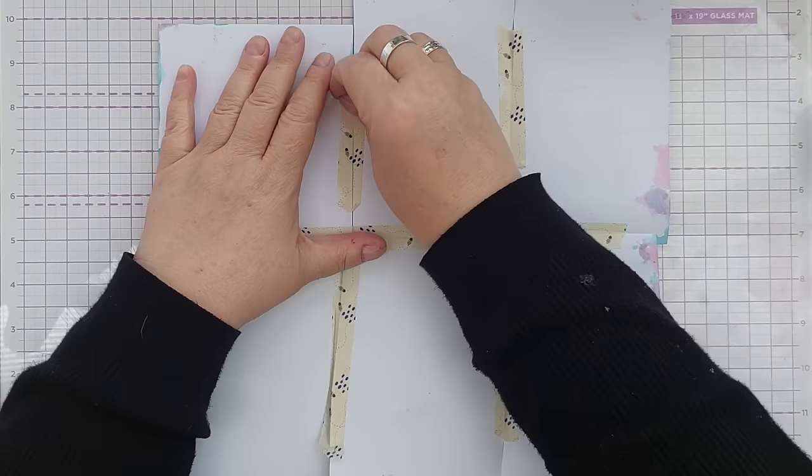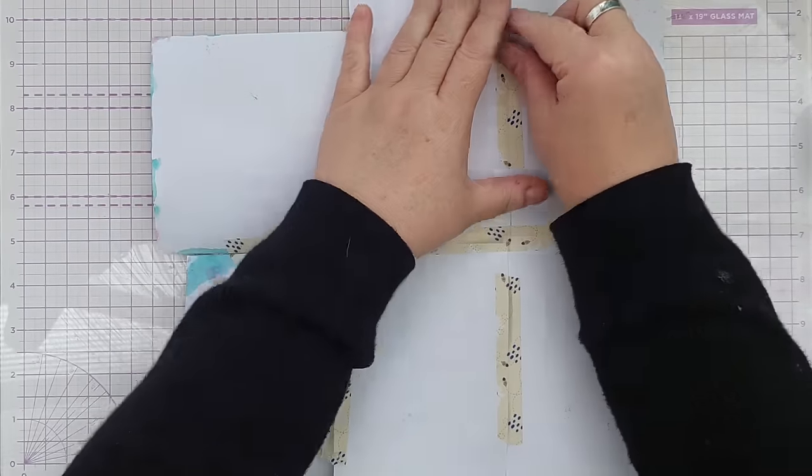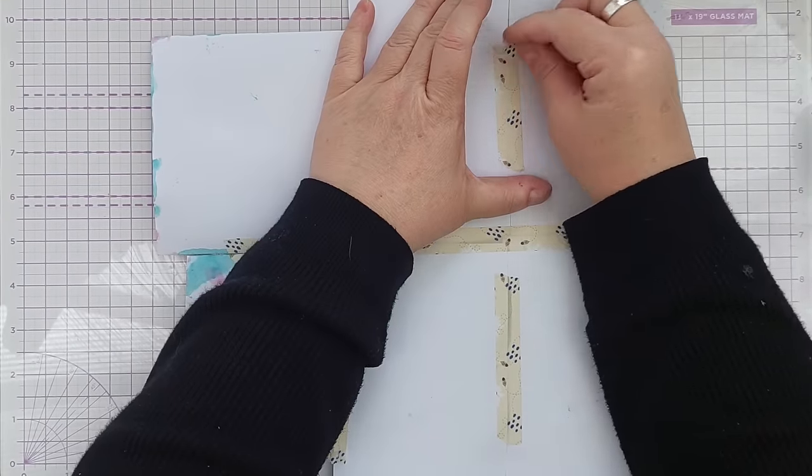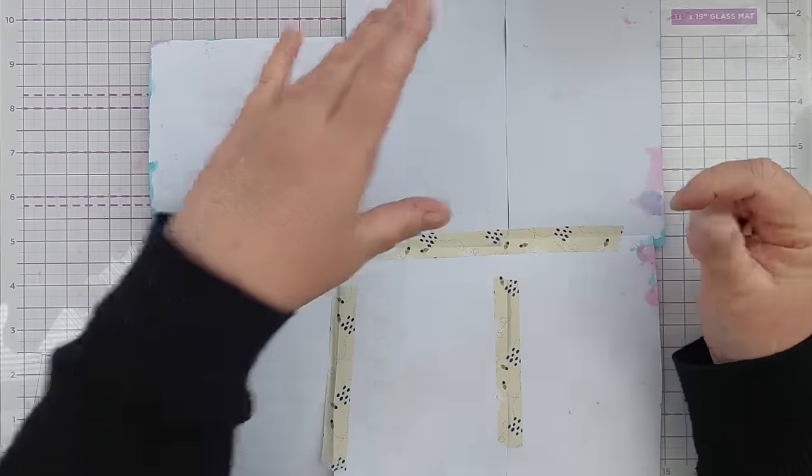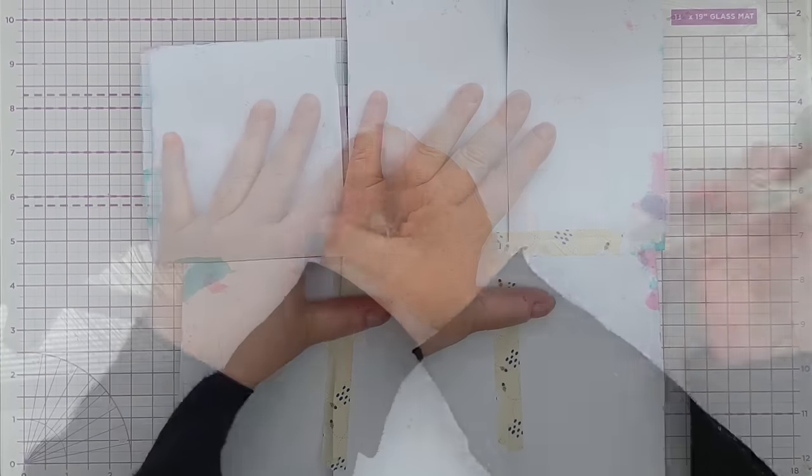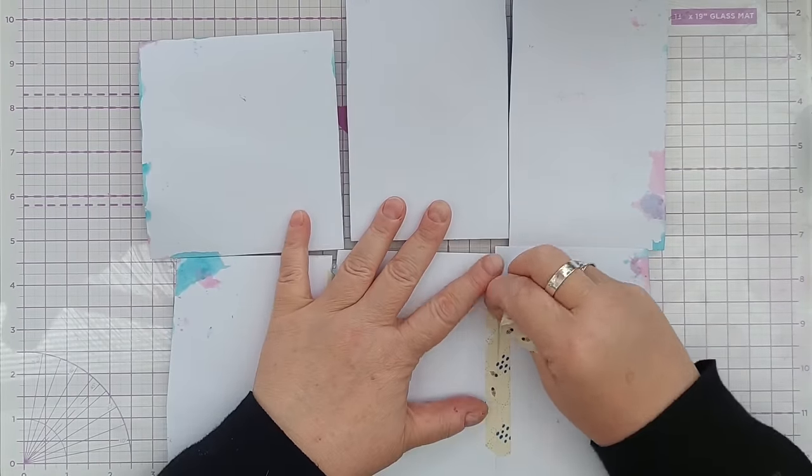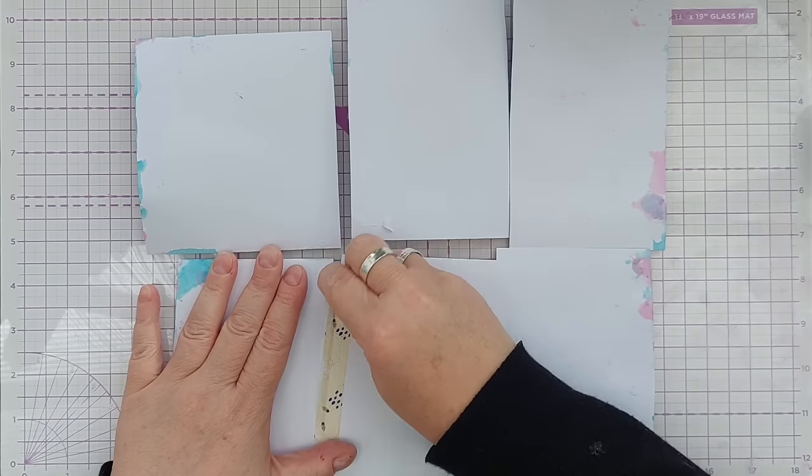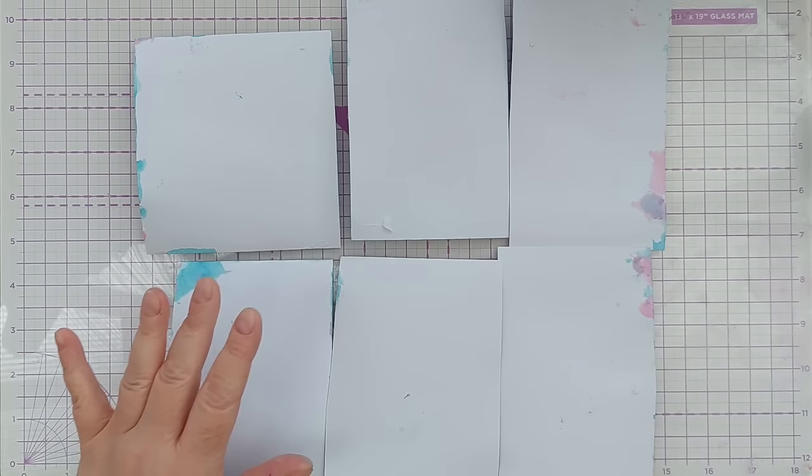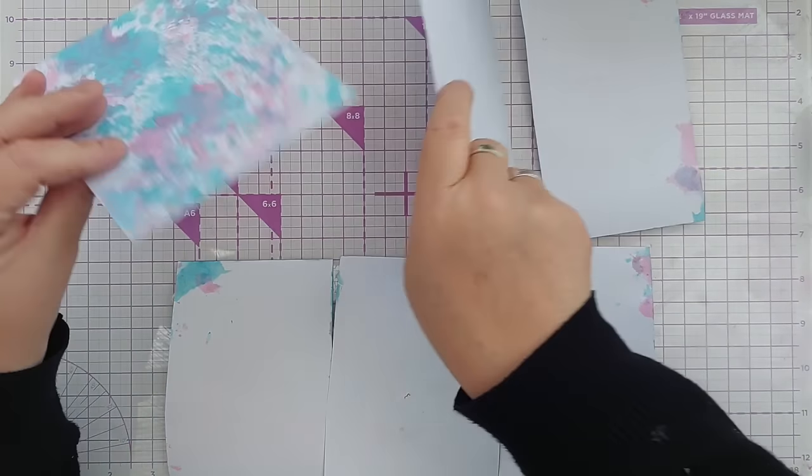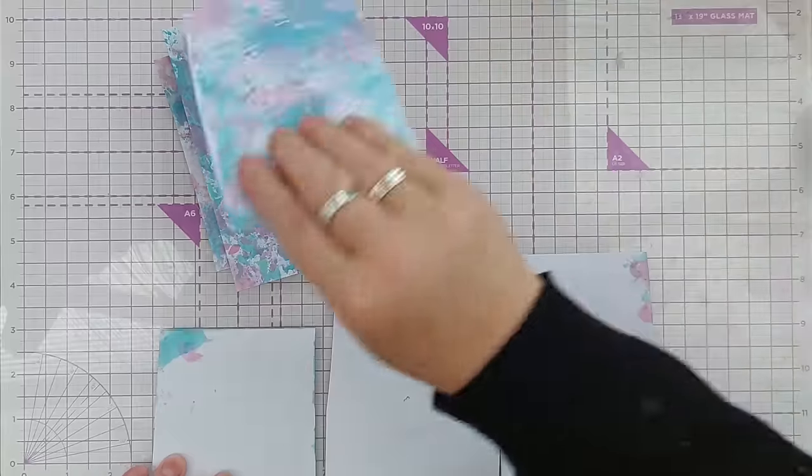So that's all dry. I'm going to take the washi tape off the back because the next thing I want to do is heat embossing and that'll be easier to do with smaller individual pieces. I will give these another dry and then treat them with my anti-static powder tool just to make sure everything's good and dry and not sticky.